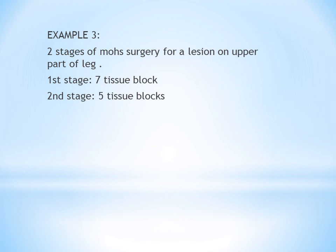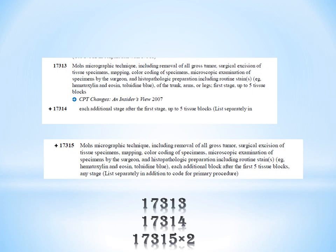Third example: 2 stages of Mohs surgery for a lesion on the upper leg. Stage 1 has 7 tissue blocks and stage 2 has 5 tissue blocks. Site is leg, so the code is 17313. Stage 1 has 7 blocks — 5 go into 17313 and the remaining 2 are kept separate. Stage 2 uses 17314. The 2 remaining tissue blocks are coded as 17315 × 2.